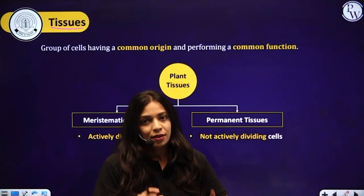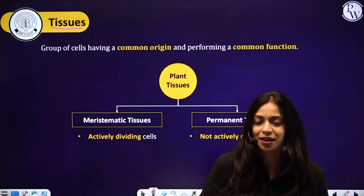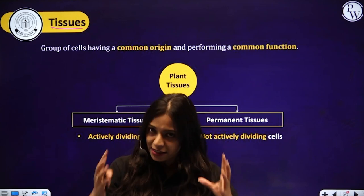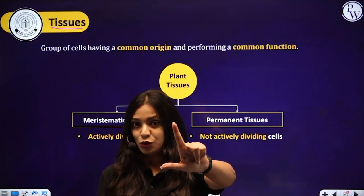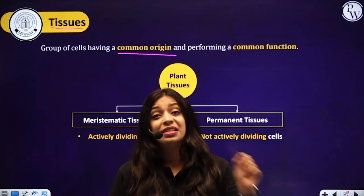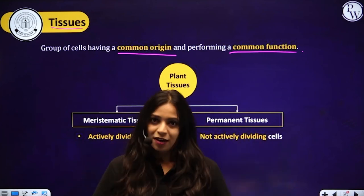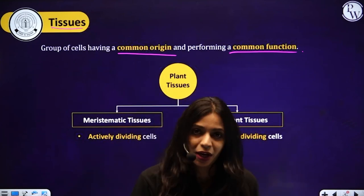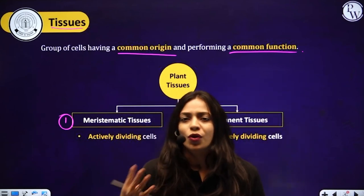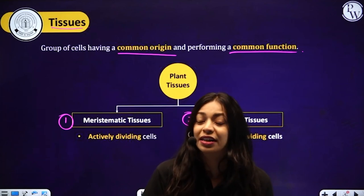Now let's talk about tissues. Tissues are a group of cells that have a common origin and perform the same job. A group of cells that have originated from the same kind of cell and perform a common function — we refer to that group of cells as tissues. When it comes to plant tissues, we can broadly categorize them into two types: meristematic tissue and permanent tissue. This classification is based on whether the cells in that tissue have the ability to divide or not.